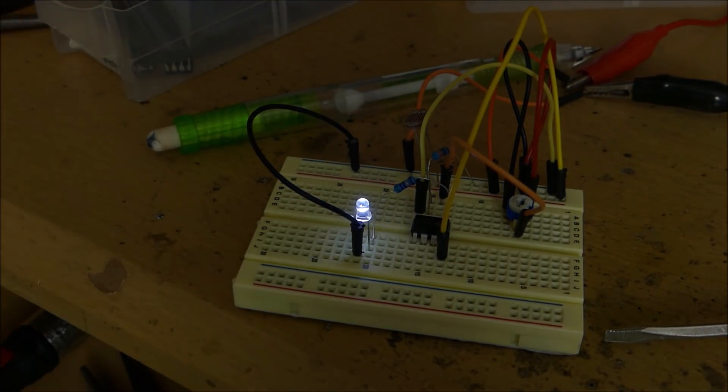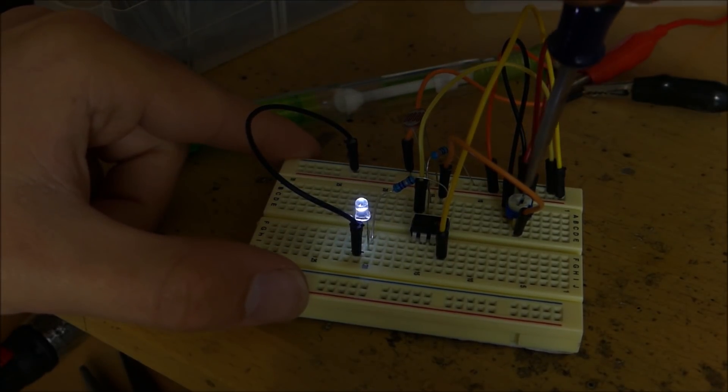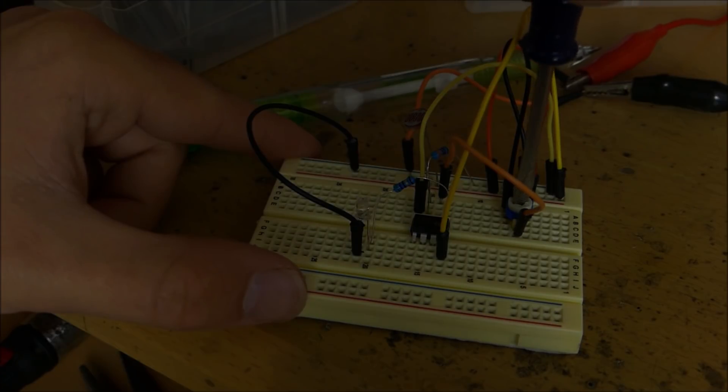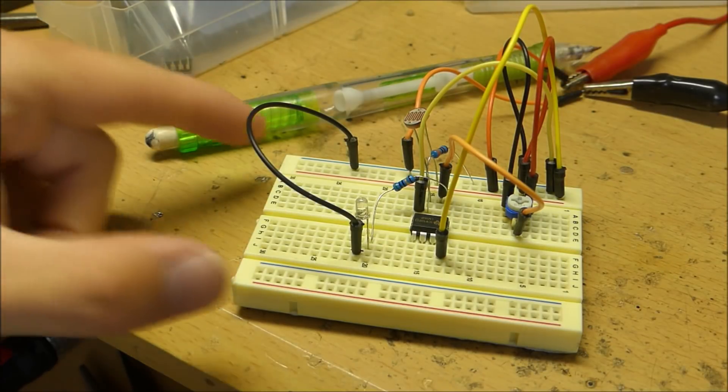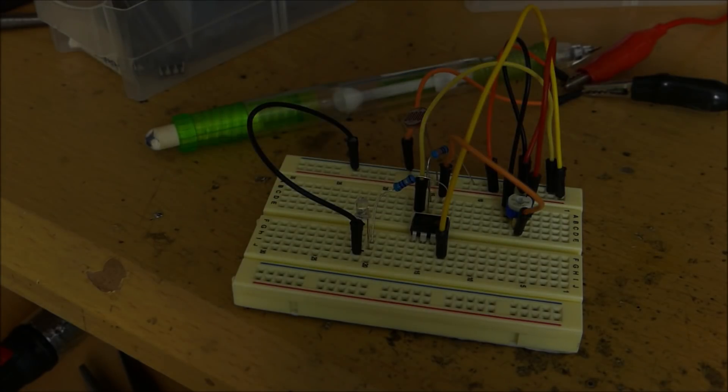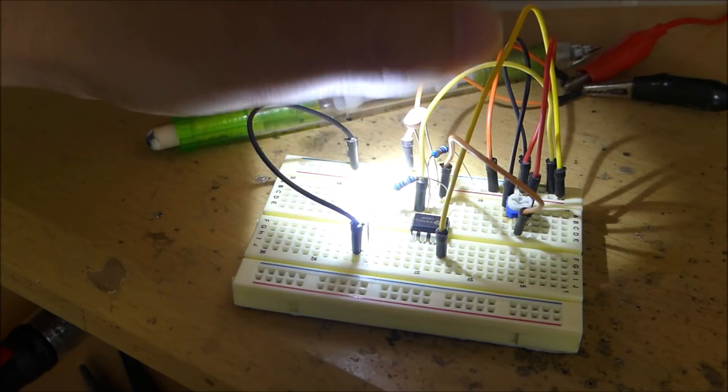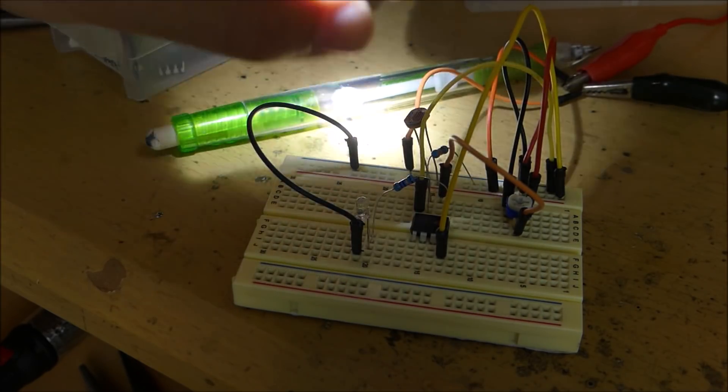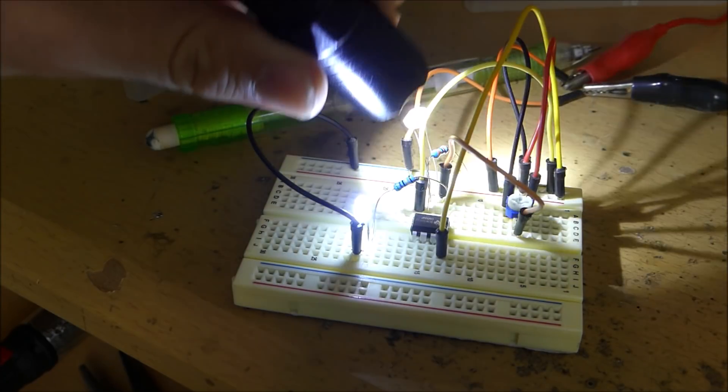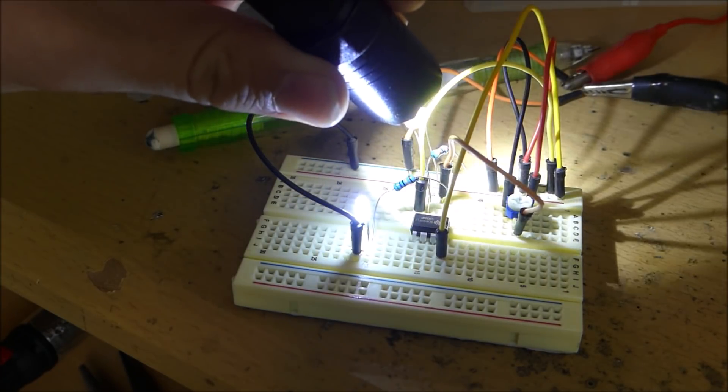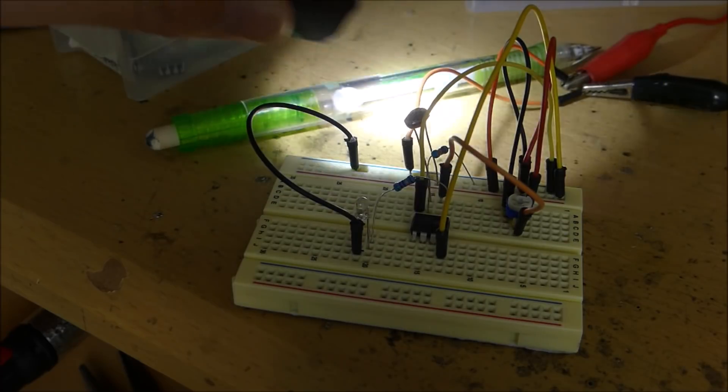When I turn off my light, I can adjust this thing a little bit until it turns off. And when I turn on my light, nothing happens. Okay, perfect. The light's off right now, and with it adjusted, if I shine my flashlight on this light, you can see that the LED lights up. When I take it off, it turns off. That's pretty cool.